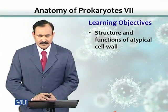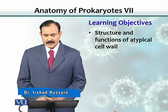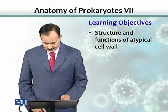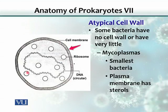Learning objectives include the structure and function of atypical cell walls. There are bacteria that do not have a cell wall at all. Mycoplasma is one example where there is only a cell membrane, along with DNA and other components like ribosomes and cytoplasm. The plasma membrane of these organisms, like Mycoplasma, contains what we call sterols.